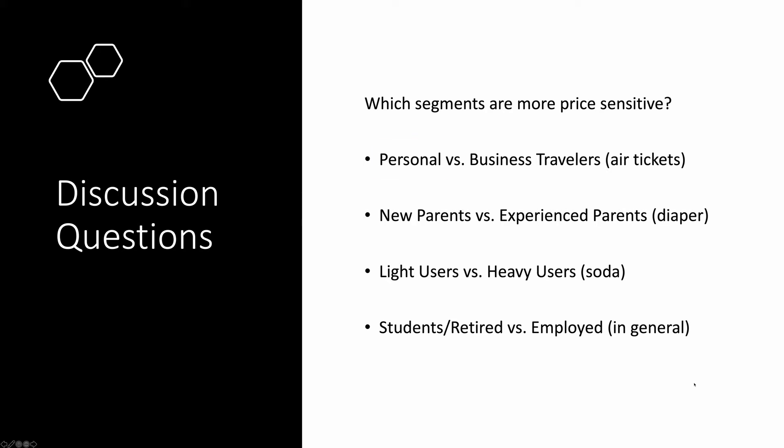For the first pair, personal travelers are more price sensitive. For the second pair, experienced parents would have more diaper purchase experience — they would have seen more diapers — and as a result, they tend to be more price sensitive. For the third pair, heavy users are more familiar with the pricing history of soda, so they tend to be more price sensitive. For the fourth pair, students or retired customers have no stable source of income, and they tend to be more price sensitive.